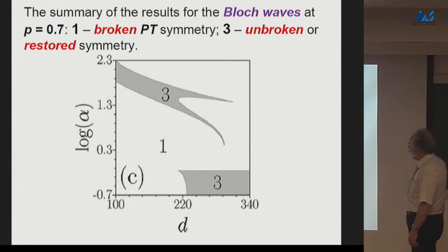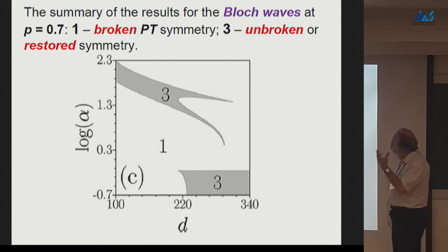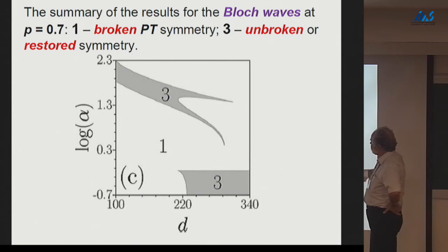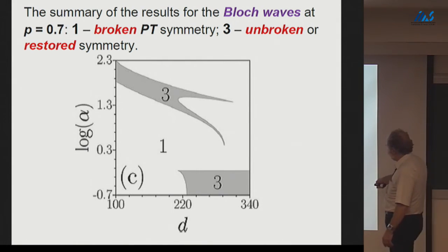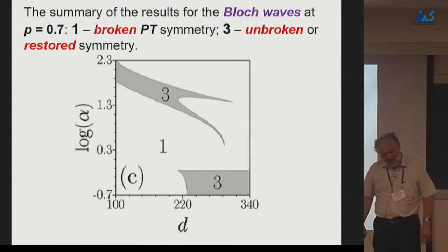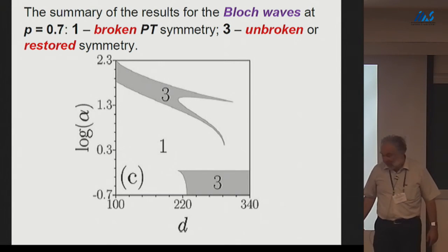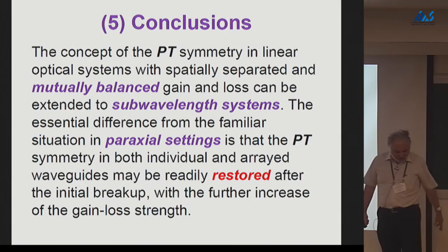The summary diagram for the periodic array — alpha on a logarithmic scale versus D — shows two region types: Region 1 (at least partly broken PT symmetry) and Region 3 (fully restored PT symmetry). As alpha is increased, alternating restoration and breaking of PT symmetry are observed. At very small D, the picture may be quite complex, and behavior at still larger alpha values remains unknown.